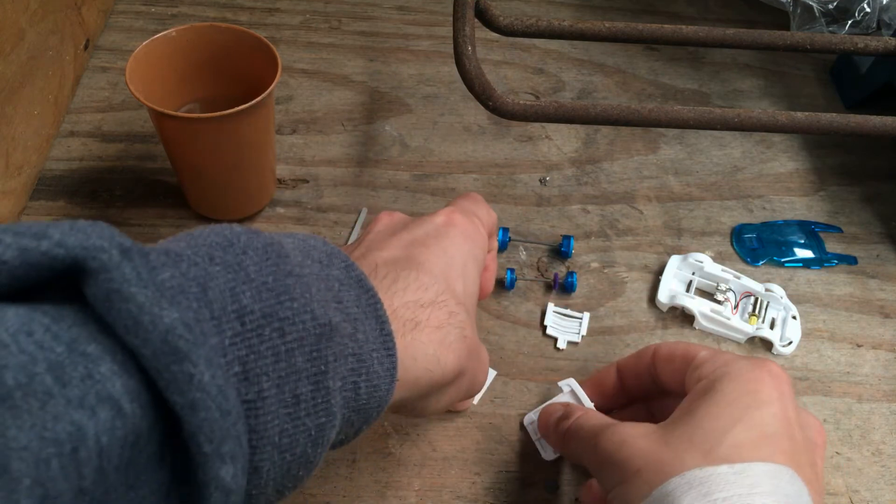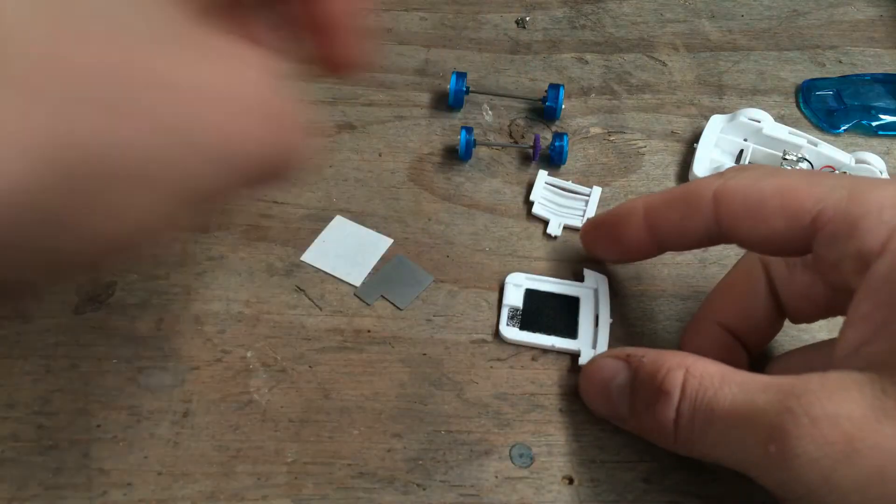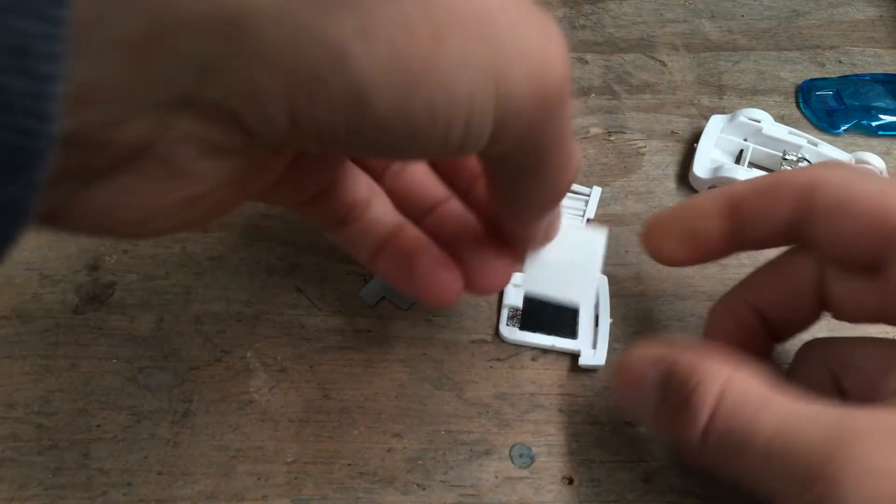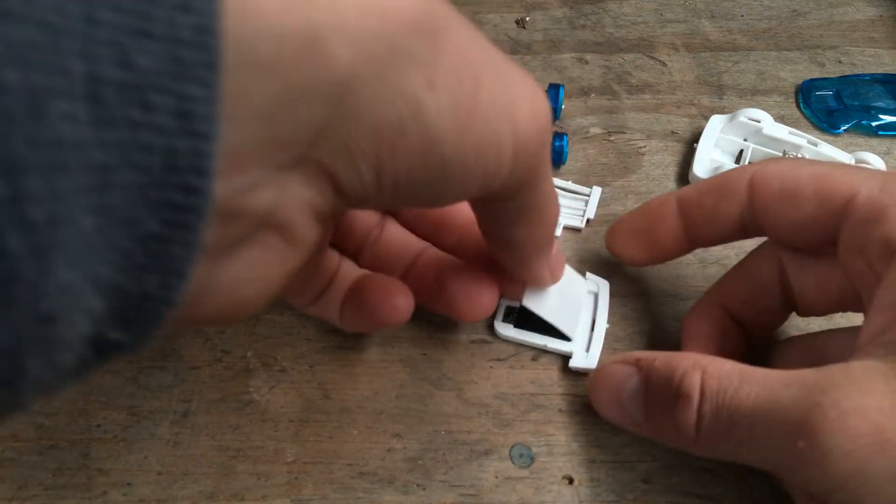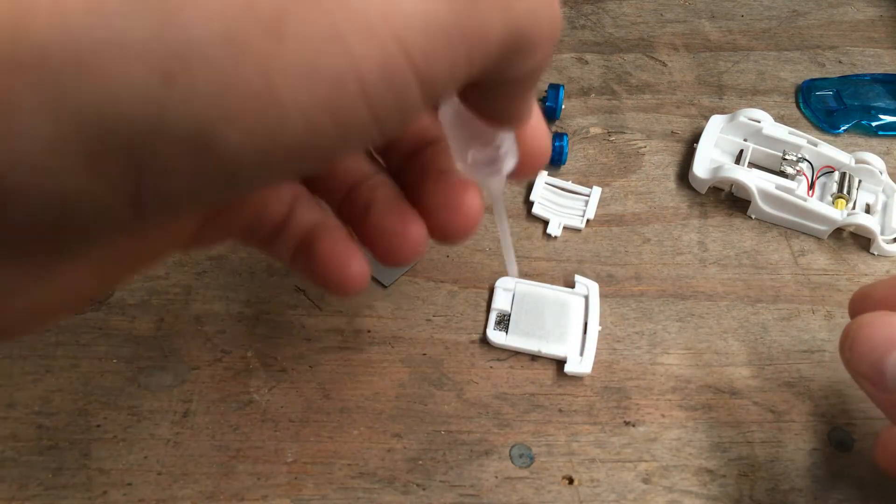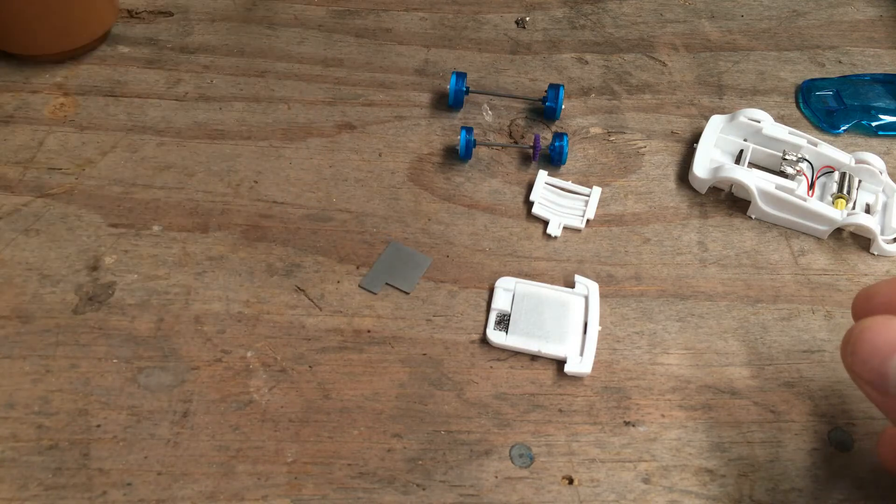And the way it all sits together is this air cathode sits at the bottom, then I get the little bit of fabric and then sitting on top of the fabric will be the magnesium.